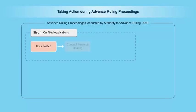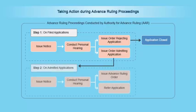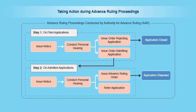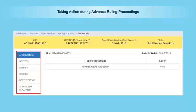Once a registered applicant has filed an application for advance ruling, the advance ruling proceedings get initiated to first admit or reject the filed application. The rejected application is closed, while the admitted application undergoes proceedings for disposal. In case of concurrence among the authority members, the authority issues an order disposing the advance ruling application, and in case of difference of opinion, the authority refers the application to the appellate authority for advance ruling. Each advance ruling application is organized into multiple tabs on the GST Portal's Case Details screen.